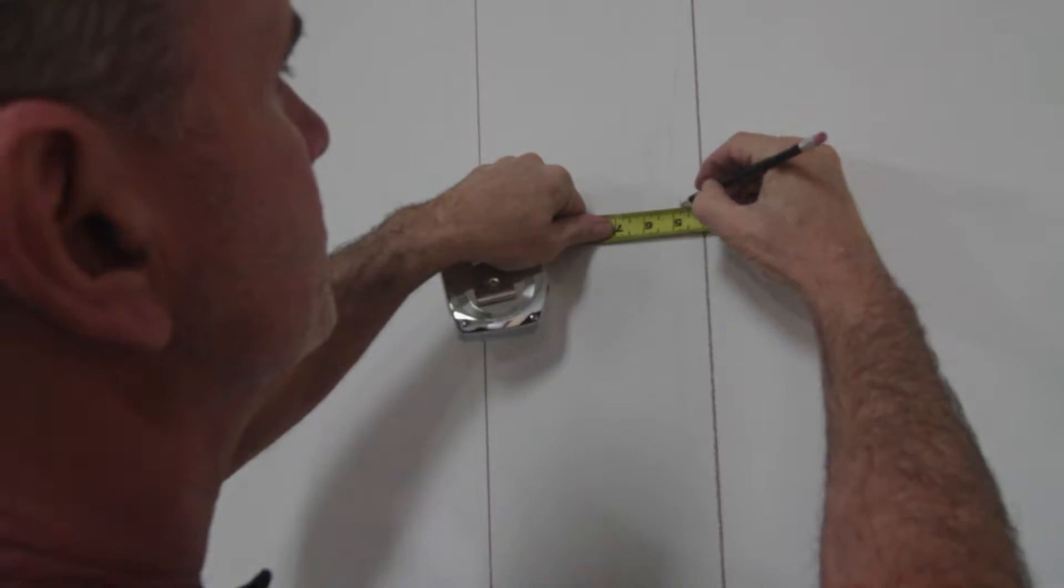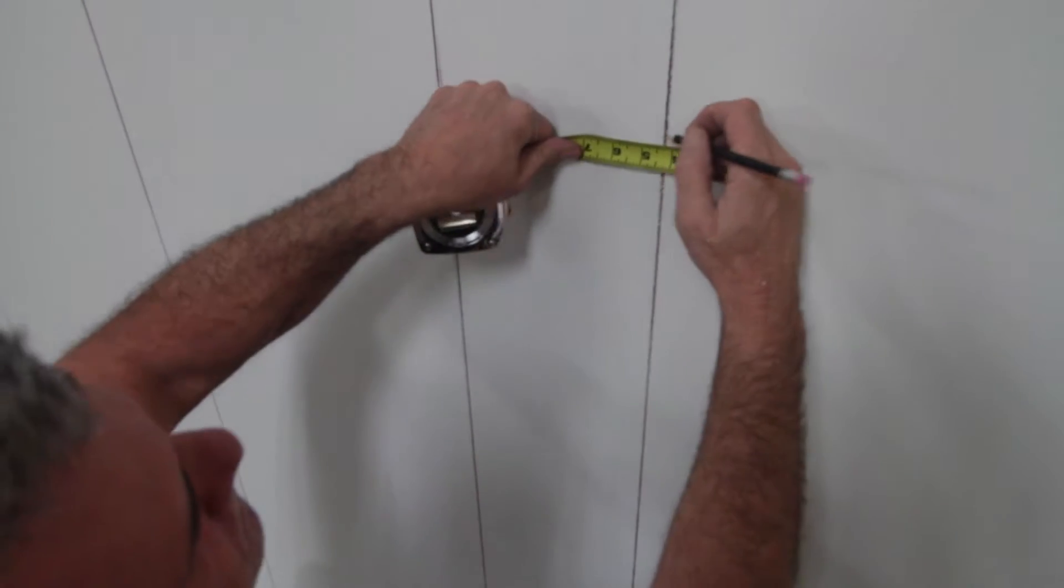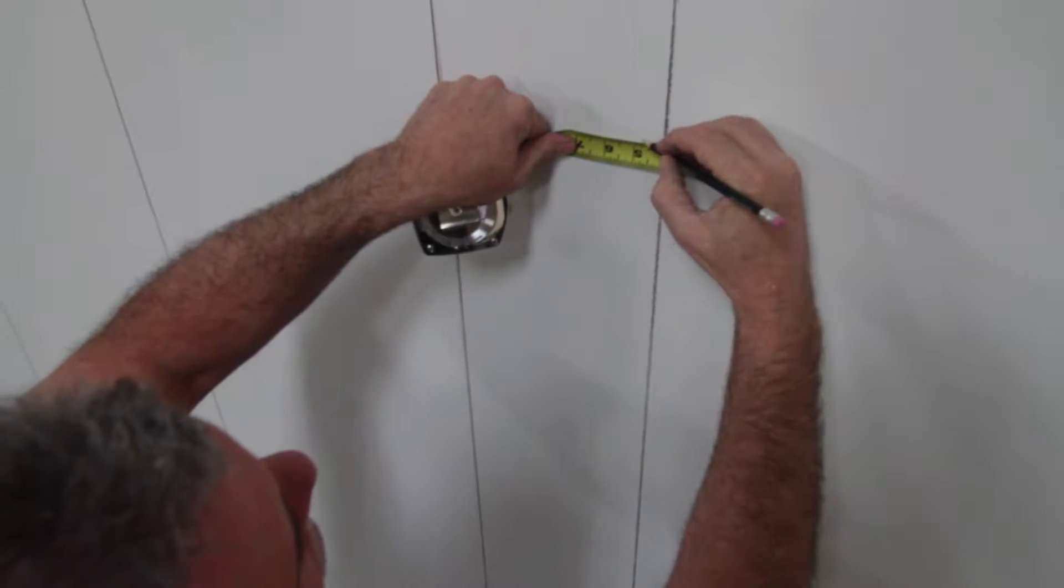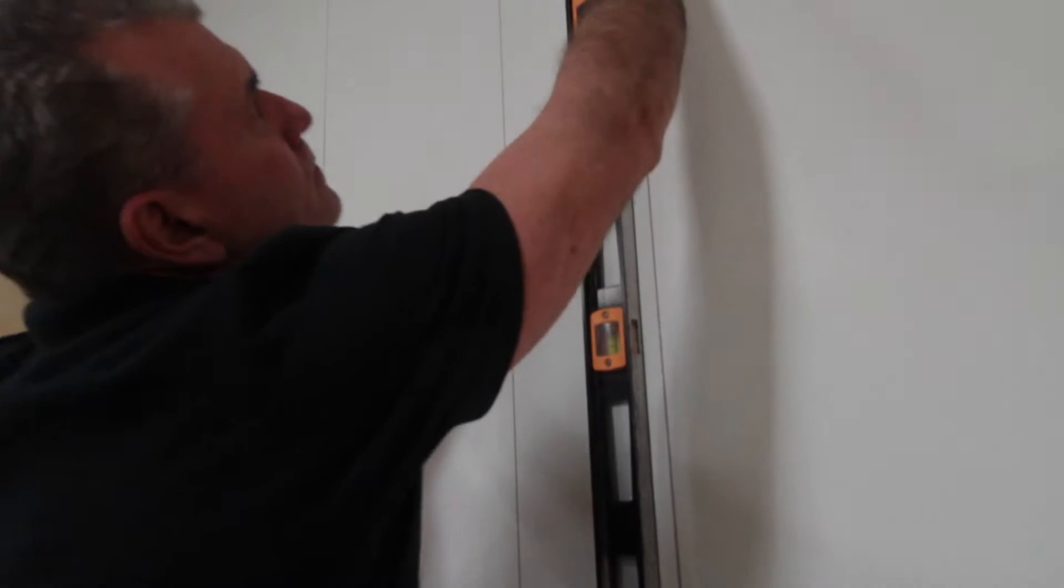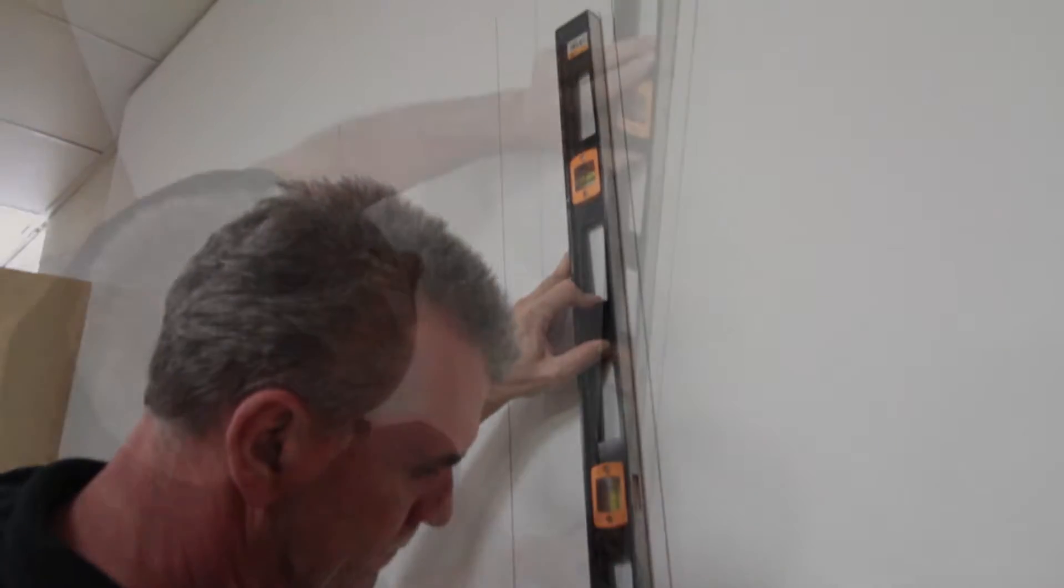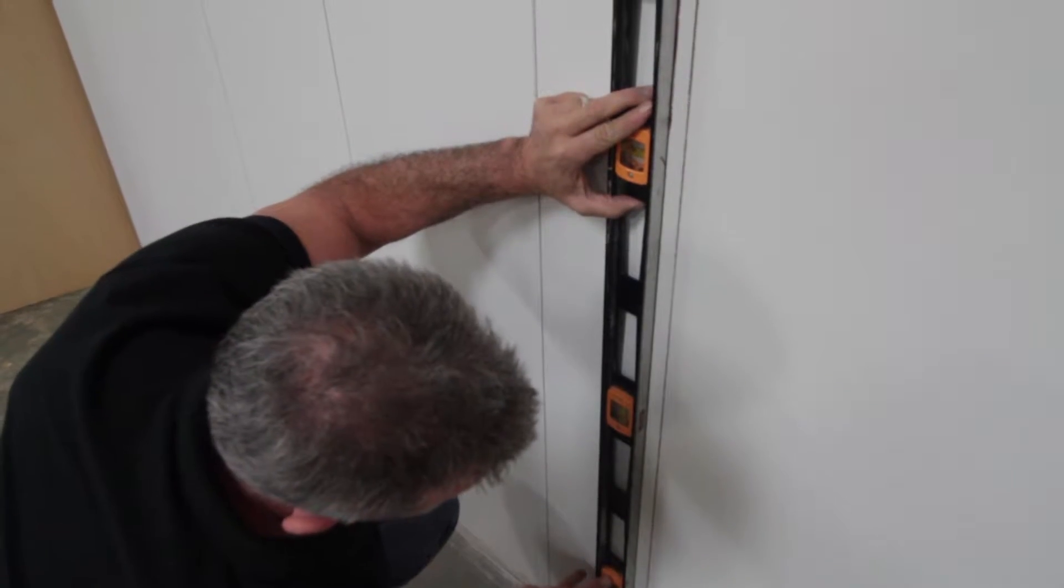The first line will be the edge of the side trim that is installed after you install your Izzawall. Mark a second plumb line 3 quarters of an inch to the left of your first plumb line. This line will be your guide to install your struts.